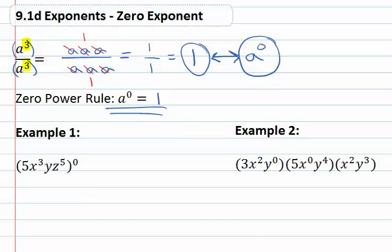So in example one, when we see five, x cubed, y, z to the fifth, and that whole thing is to the zero power, that means this whole thing is going to simplify to just one. Anything to the zero power is one.